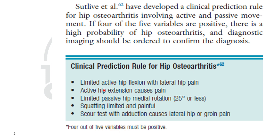The five variables are: limited active flexion with lateral hip pain, active hip extension causing pain, limited passive hip medial rotation of 25 degrees or less, squatting being limited and painful, and the scour test with adduction causing lateral hip or groin pain. Out of these five variables, four must be positive.